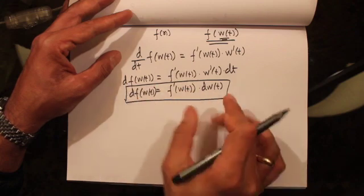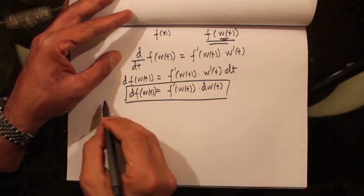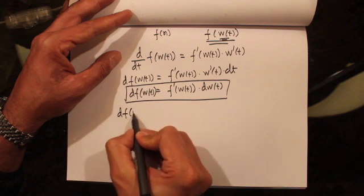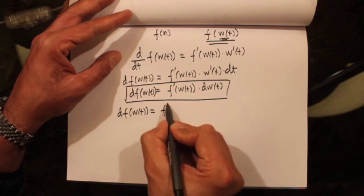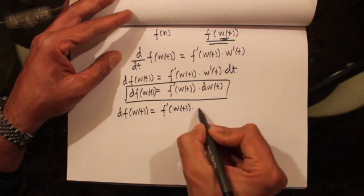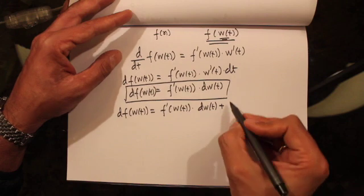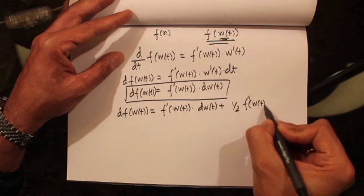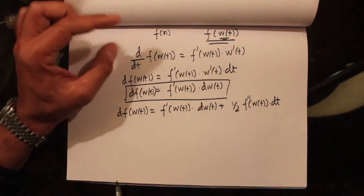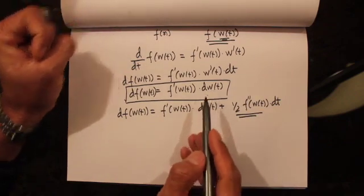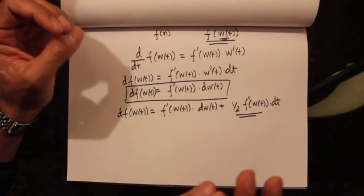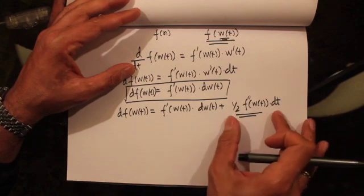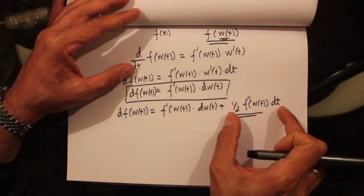We will actually get an additional term. Let me rewrite this equation for a Brownian motion. For a Brownian motion, this would be df(w(t)) is equal to f'(w(t)) dw(t) plus half f''(w(t)) dt. And this term we get because w(t) is a Brownian motion with non-zero quadratic variation. Why this term comes up, I'm going to show you in just a moment.